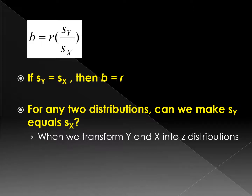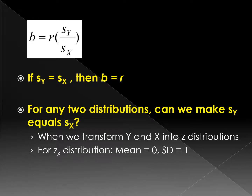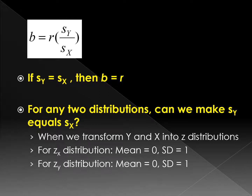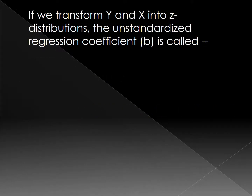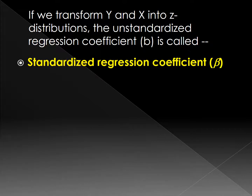When we transfer y and x into Z distributions, for the Z_X distribution, the mean is 0 and the standard deviation is 1. When we transfer y into a Z distribution, the Z_Y distribution also has mean 0 and SD of 1. Therefore, for these two Z distributions, the mean of Z_X equals the mean of Z_Y, which is 0, and the standard deviation of both Z distributions is 1. If we transfer x and y distributions into Z distributions, the unstandardized regression coefficient B will be called a standardized regression coefficient, beta.